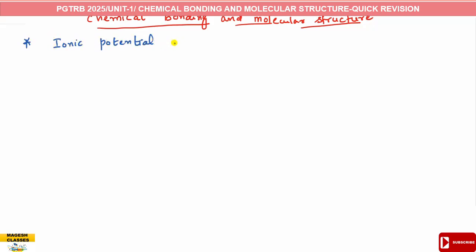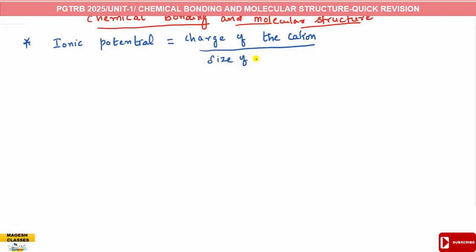The first one is the ionic potential. Ionic potential is equal to the charge of the cation divided by the size of the cation.